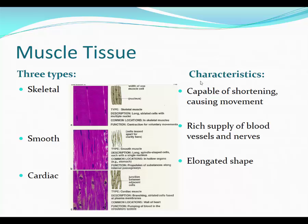Muscle tissue is in its own category. There are three types: skeletal muscle causes us to move our bones and attaches to them; smooth muscle propels substances inside our body — except for the erector pili muscle in the skin, which is a smooth muscle that causes goosebumps; and cardiac muscle is the muscle that contracts our heart when it's pumping blood, relaxing and contracting. Just know the three types of muscle.